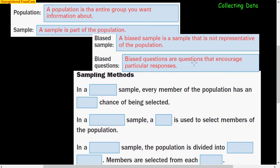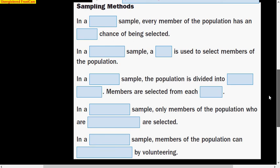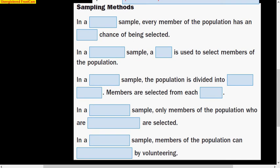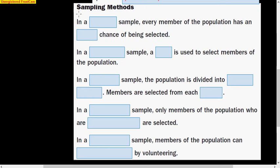Biased questions are ones where you're asking the right people, but you're asking them questions encouraging them to answer yes or no. There's words in that question that encourage them one way or the other. So we're going to fill in some blanks here. In a random sample, every member of the population has an equal chance of being selected.